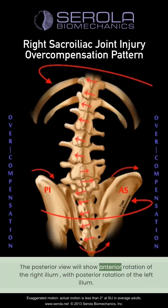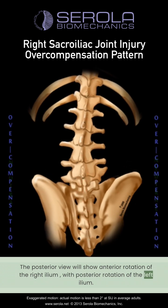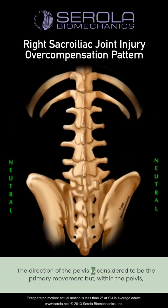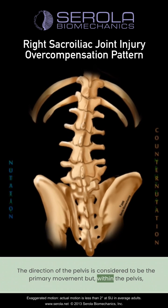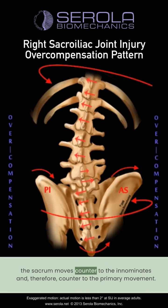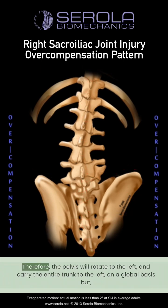The posterior view will show anterior rotation of the right ilium with posterior rotation of the left ilium. The direction of the pelvis is considered to be the primary movement, but within the pelvis, the sacrum moves counter to the innominates and, therefore, counter to the primary movement.